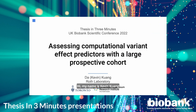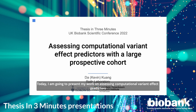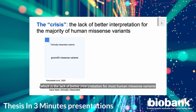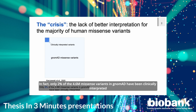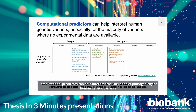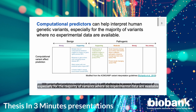Hi, my name is Kevin Kwon, a recent PhD graduate from the Ross Lab at the University of Toronto. Today I'm going to present my work on assessing computational variant effect predictors with the UK Biobank cohort. I'd like to begin with this crisis: a lack of interpretation for most human missense variants. Only 2% of the 4.6 million missense variants in gnomAD have been clinically interpreted. And for those variants in ClinVar with clinical interpretation, over 50% are interpreted as Variants of Uncertain Significance, or VUSs. These VUSs contribute minimally to clinical decision making.